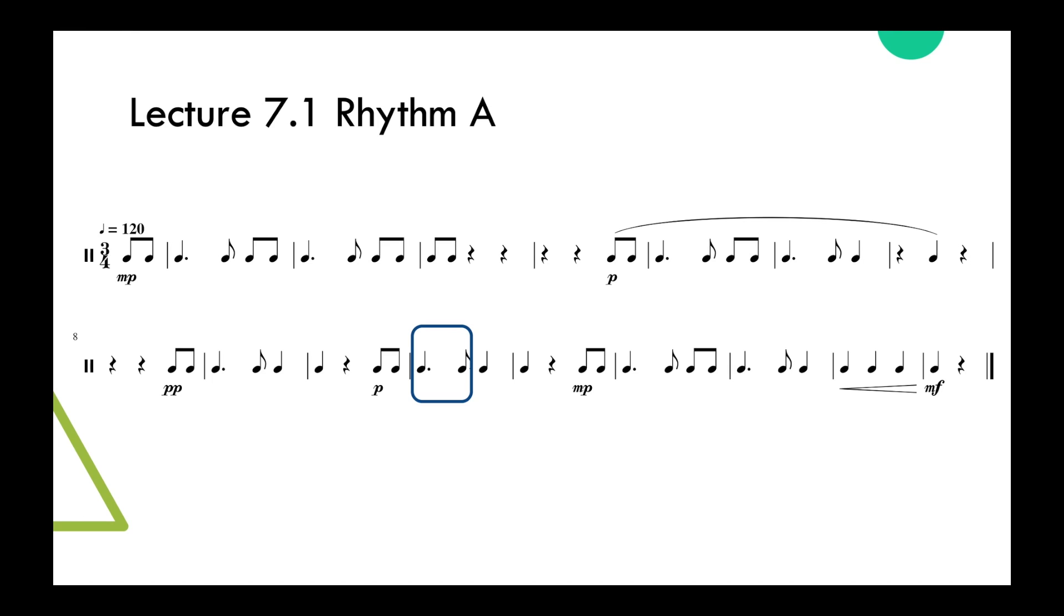Next measure, dotted quarter plus an 8th, and then a quarter note. Next measure, I've got a quarter note, quarter rest, and then 2 8th notes as my 3rd beat. And this one now changes the dynamic to mezzo piano. Dotted quarter note plus an 8th note, and then 2 8th notes. Dotted quarter plus an 8th note, and then 1 quarter note. And then 2 quarter notes plus 1 more quarter note. And your final measure is 2 beats only because there was a pickup at the very beginning.